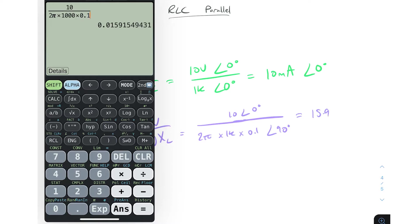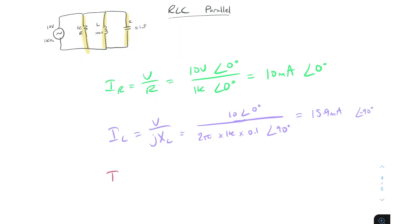We have 15.9 milliamps, and for the phase shift, since we're doing zero degrees divided by 90 degrees, it's zero degrees minus 90 degrees, which gives us a phase shift of minus 90 degrees.